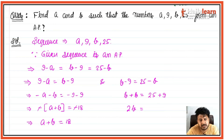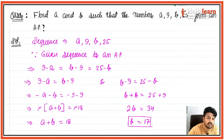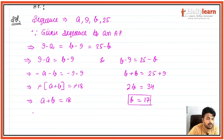Doosre equation se: b minus 9 is equal to 25 minus b, toh b plus b is equal to 25 plus 9, yaani 2b is equal to 34. Is tarah b ki value aayegi 17.